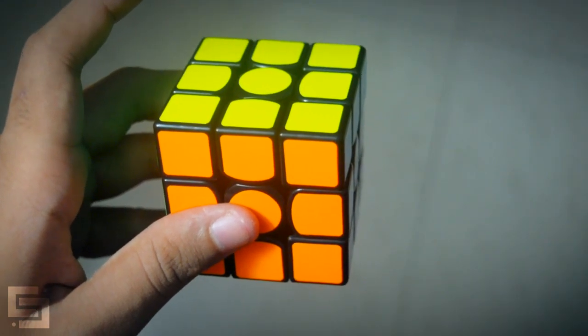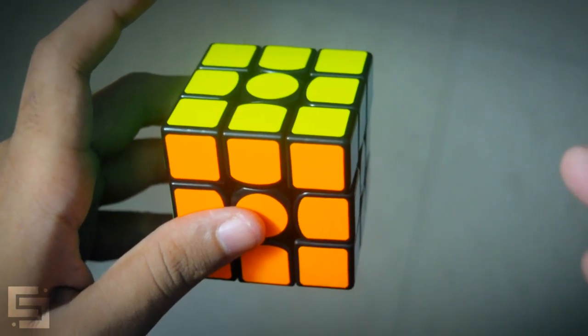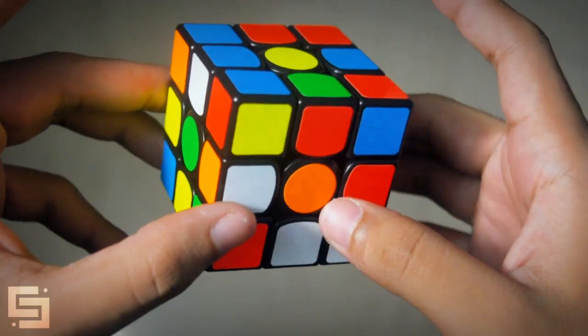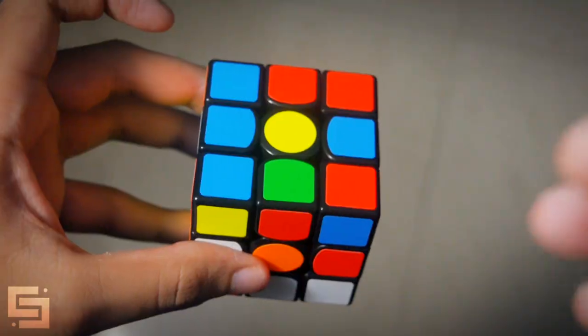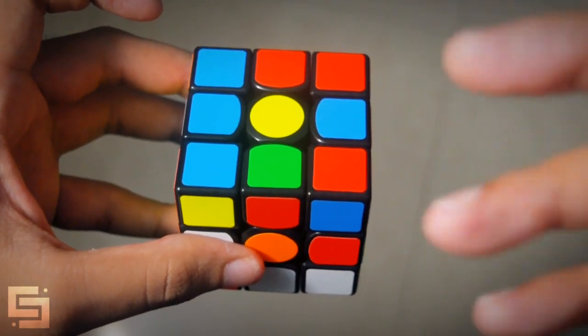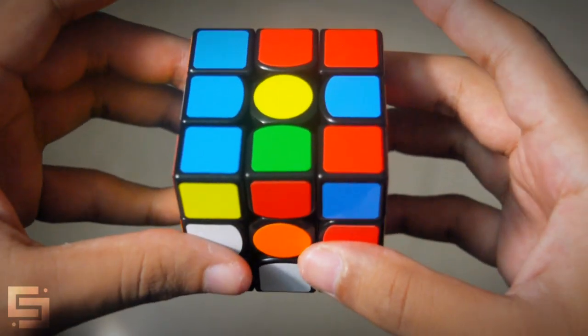So the main takeaway from this solve is the inspection planning. And we shall go over the inspection once more. This was the scramble and you can already see that you have an easy cross and you also have an easy first pair. So planning the cross plus 1 wasn't difficult. L U F' R' Y U.